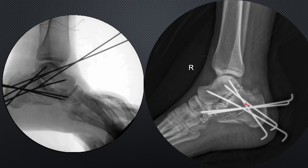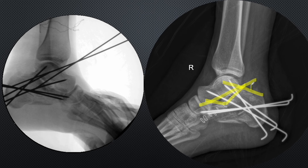This is the post-operative radiograph. You see the area of the skin incision and the articular reduction appears good now. All the angular parameters are good. This is the Gissane angle — this is the anterior process and this is the alignment of the posterior facet — it is good. If we draw the Bohler angle, it is now 30 to 40 degrees, which is the normal value. The Gissane angle varies from patient to patient and the key thing is to verify that the articulation is correct.